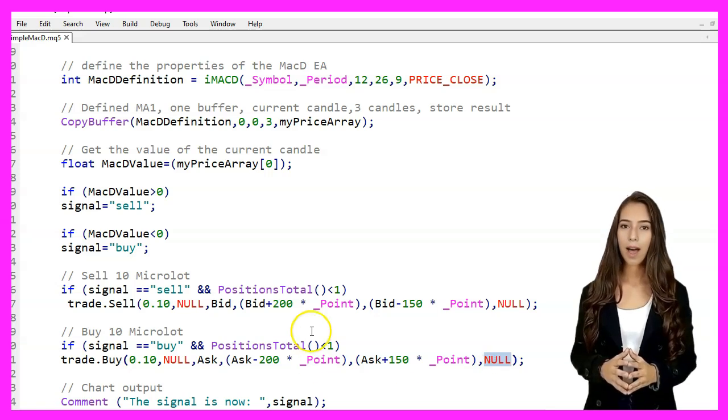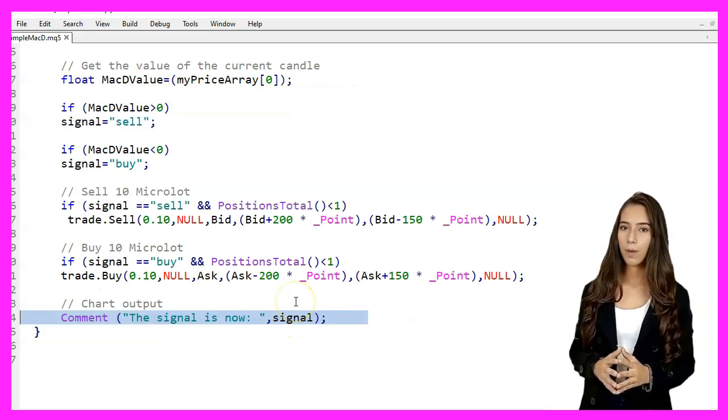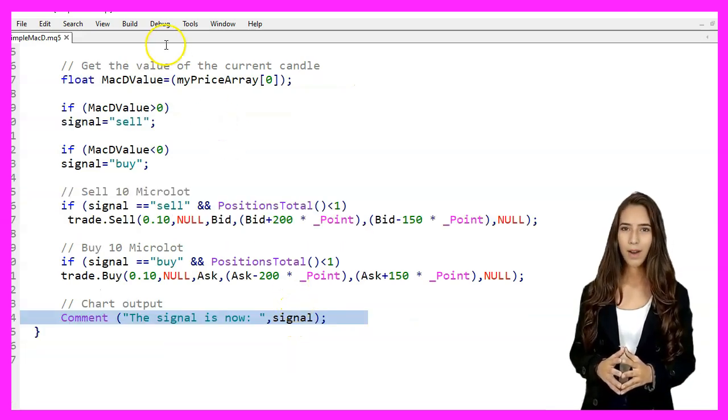Finally, we output the current signal to the chart using the Comment function. We press F7 to compile the code.